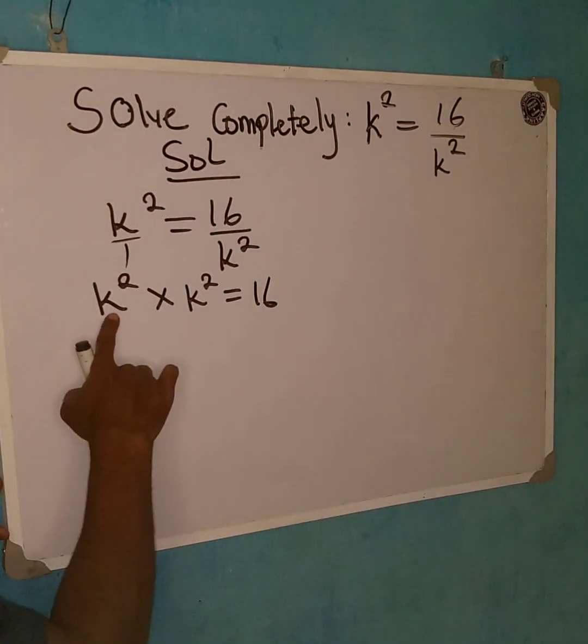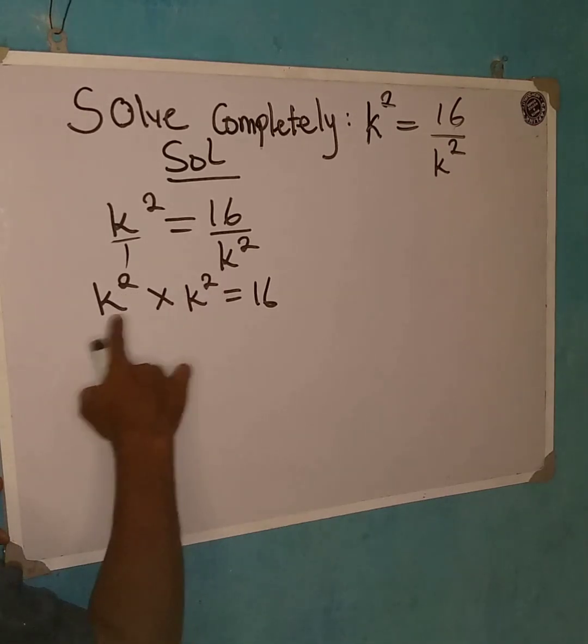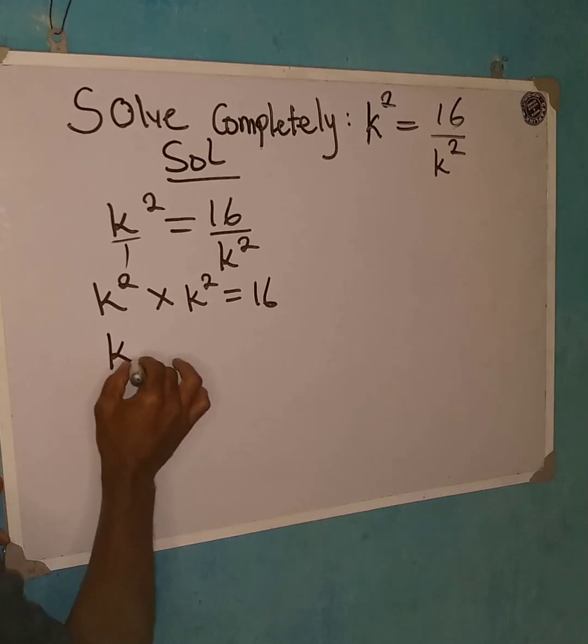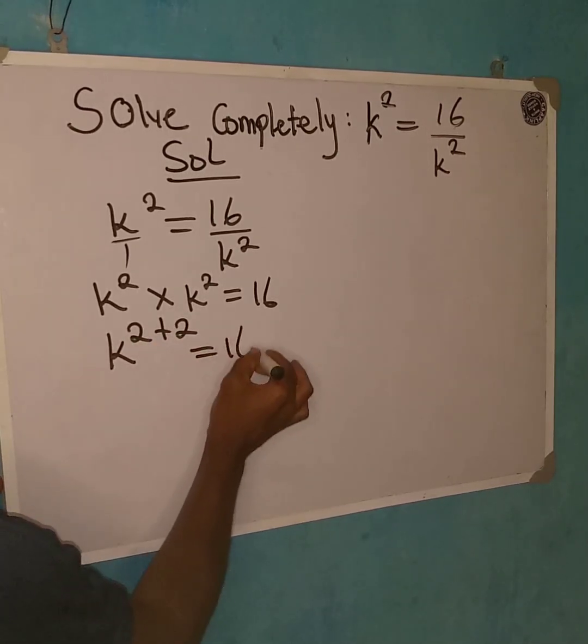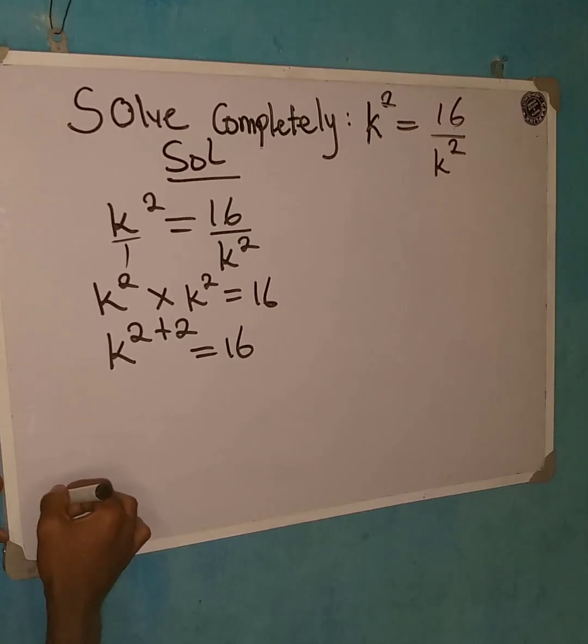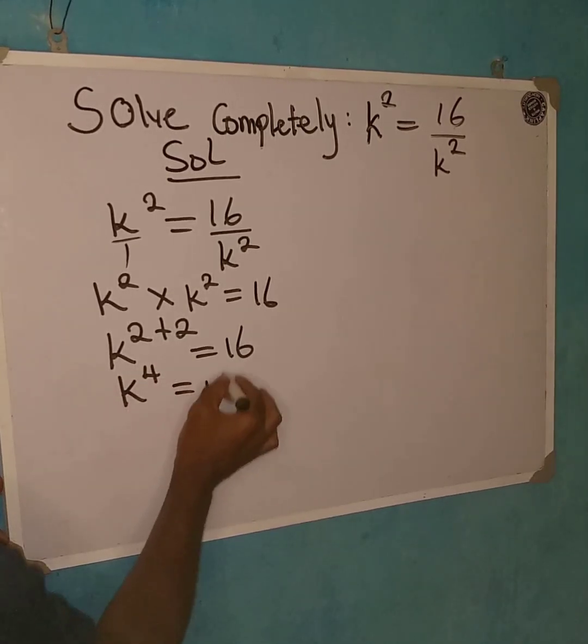And then from here, since we are having the same base, we are going to add the power and pick one of the bases. So k will be equal to 2 plus 2, and then we have this to be equal to 16. I can add this, k to power 4 is now equal to 16.